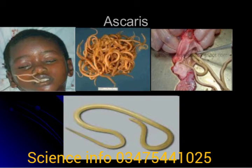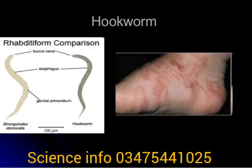Hookworm, also known as Ancylostoma duodenale, is a parasite of the small intestine found in Asia, North Africa, and Europe. It holds the walls of the intestine, sucks blood, and produces anticoagulants to prevent clotting. In children, it causes severe anemia and retards physical and mental growth.